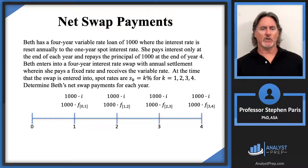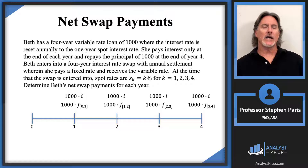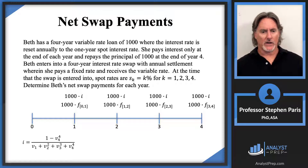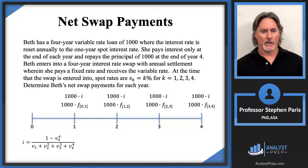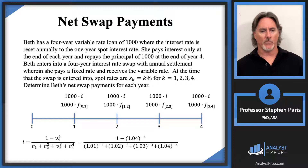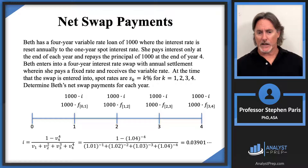Going back to the timeline, the first thing I have to do is calculate the I value. I have level notional amounts, and when I have level notional amounts there's a nice formula for the swap rate. The V sub four in the numerator uses the four-year spot rate of 4%, so V sub four equals 1.04 to the minus one, and V sub four to the fourth is 1.04 to the minus four. Likewise, plug in the other values. After this tedious numerical calculation, I get approximately 3.901%. That's the swap rate — that's the first step.